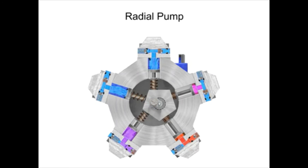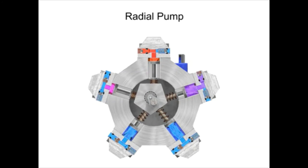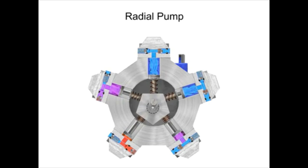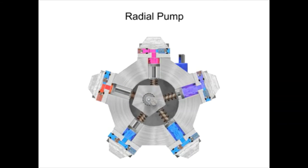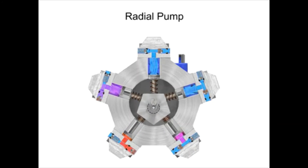As the shaft rotates, the cam moves towards the pistons, forcing them down into the cylinder block and discharging the fluid. As the cam moves away, springs help retract the piston and cause the intake stroke. Check valves ensure that fluid only enters the inlet ports and only exits the outlet ports.